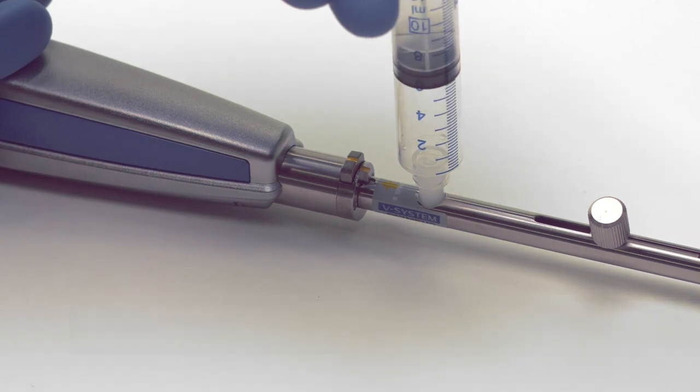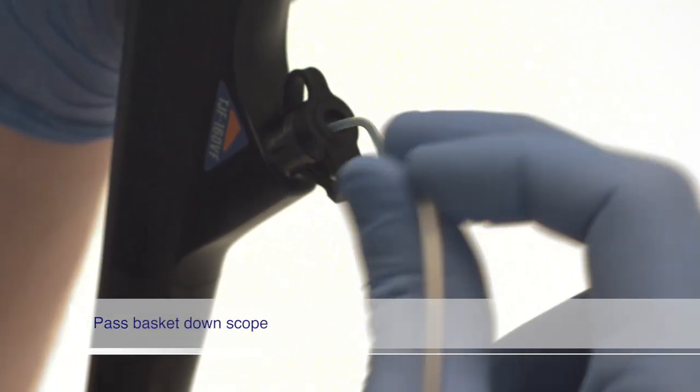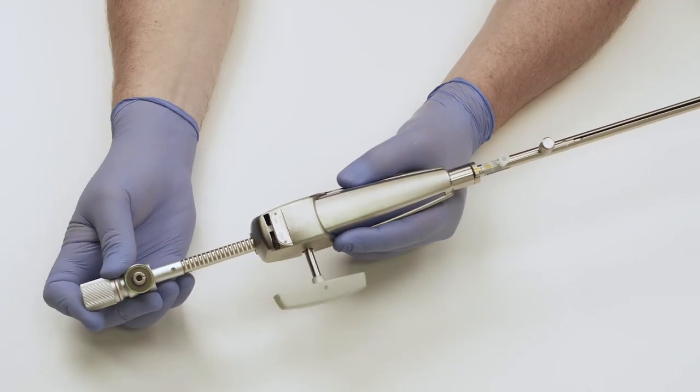After flushing, pass the basket down the scope into the patient's duct. The bullet tip version of LithoCrush V has a plastic sheath which helps prevent trauma when cannulating the duct. Once the basket is in the duct, open the basket by advancing the rod on the handle forward until the basket is fully deployed.